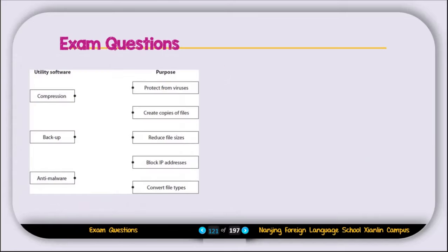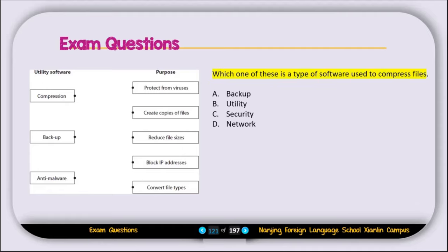Here is an exam question — we need to match the correct answers. Compression is used to reduce the file size, so number three is the correct answer. Backup is used to create copies of a file. Anti-malware protects from viruses. Next question: which one of these is the type of software used to compress a file? Options are A: backup, B: utility, C: security, D: network. The correct answer is B, utility.